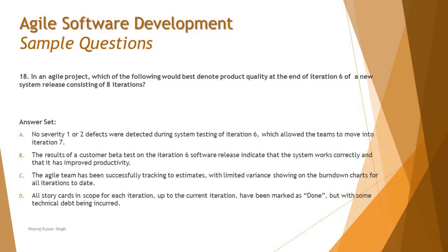Moving on to question number 18: in an agile project, which of the following would best denote product quality at the end of iteration six of a new system release consisting of eight iterations? First, understand the question clearly before looking at the options. There is an end-to-end release of eight iterations, and we are asking what defines product quality at the end of the sixth iteration.